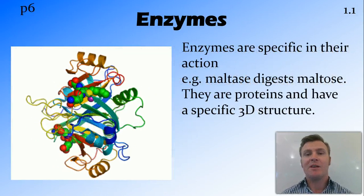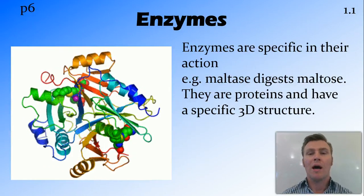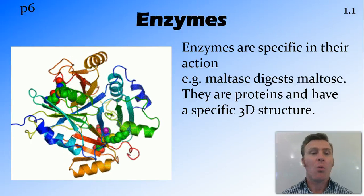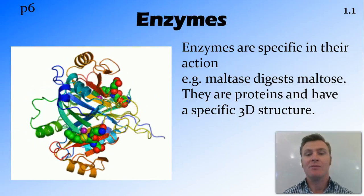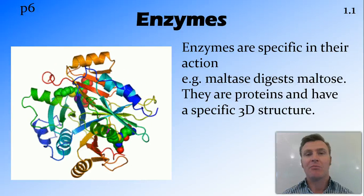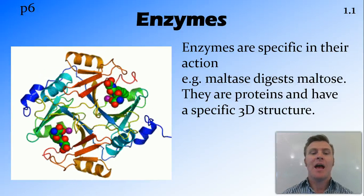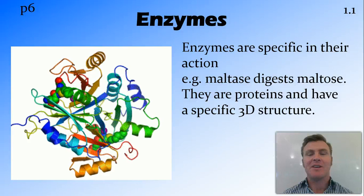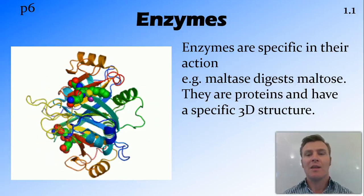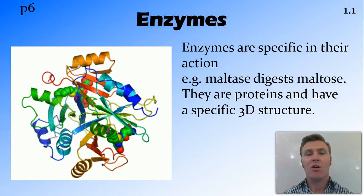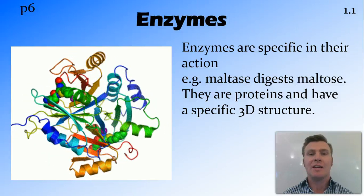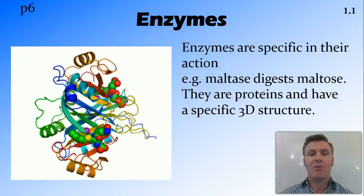Enzymes are specific in their action, so one enzyme will catalyze one particular chemical reaction. They are made of proteins or amino acids and as such have a specific three-dimensional structure. The way that the side groups of the different amino acids fold together causes the enzyme to have a particular 3D structure.